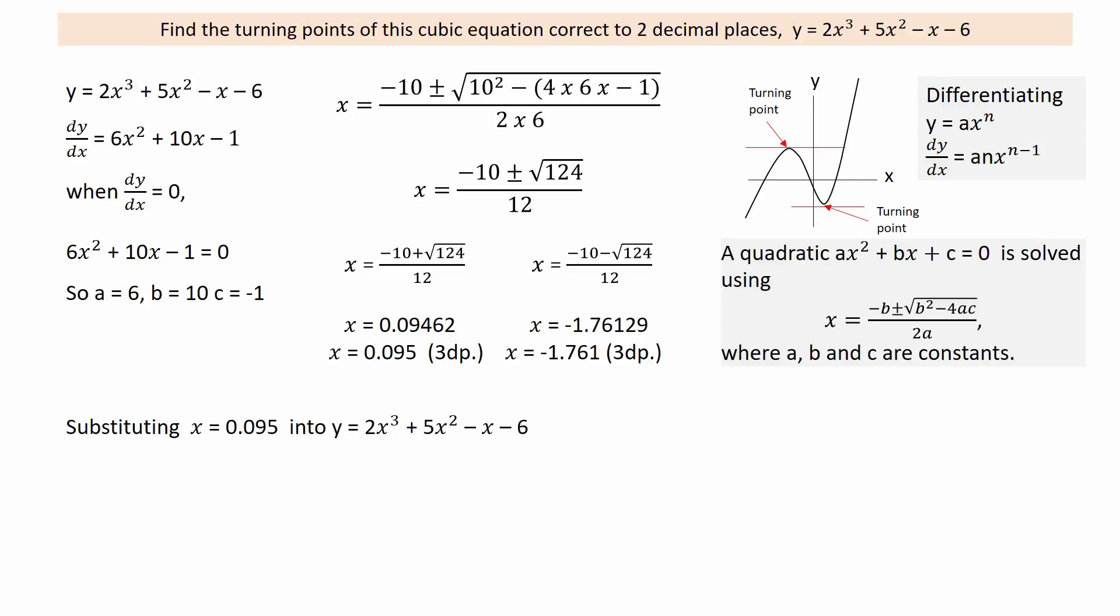Substituting the first value of x into the cubic equation to find y. The nesting of the brackets ensures the calculations are worked out in the correct order. Y equals minus 6.048 to three decimal places, giving one of the turning points, which can now be written to two decimal places.